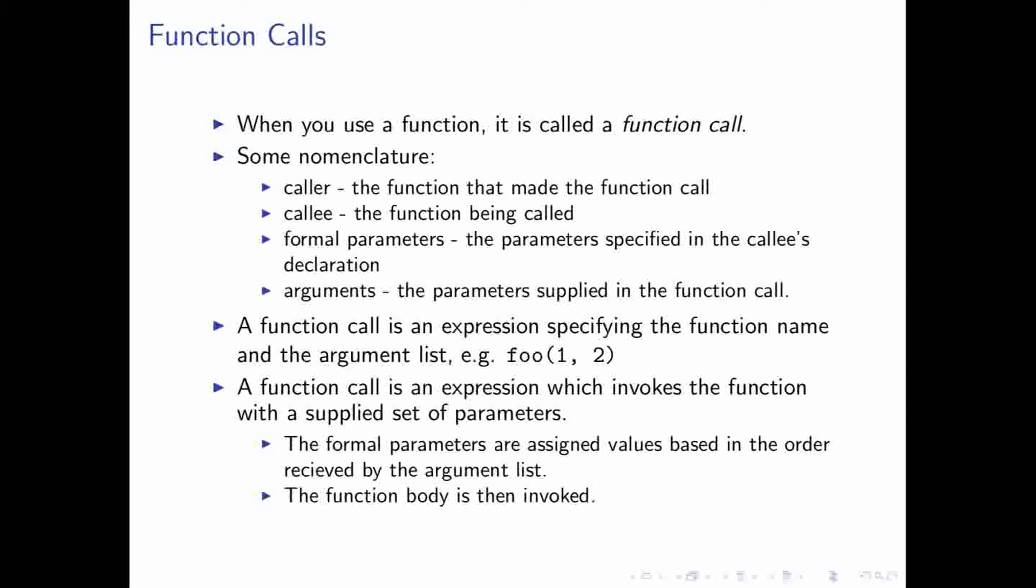As we said, the function call is actually an expression. You just put the name of the function, and then the arguments separated by commas in between parentheses, in order to specify that function call. What happens here is when we do that, the function is then invoked with those parameters. The formal parameters are actually variables, and so what'll happen is that the formal parameters will be assigned the values that you put in the parameter list whenever you made the function call. And then after that you invoke the function body. You actually perform the function.